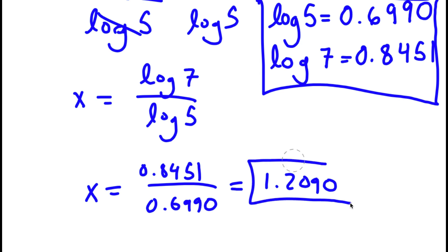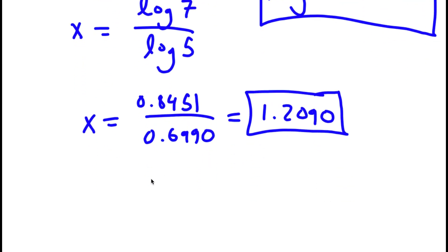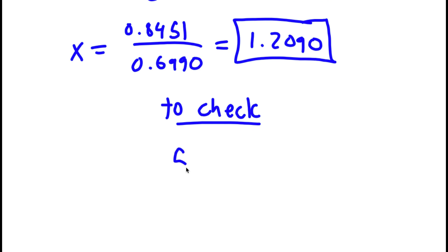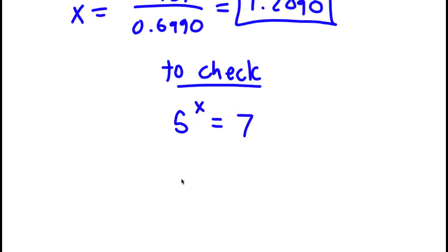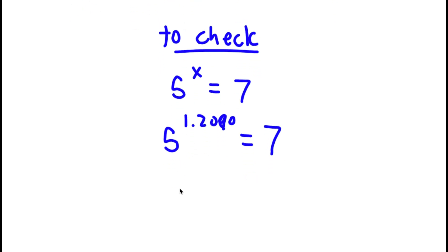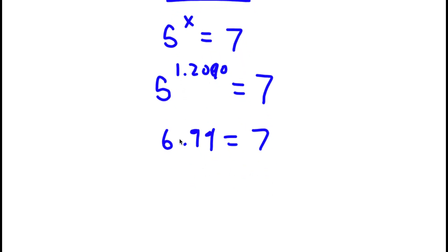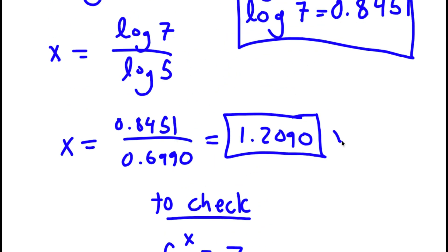So this is my answer. Now to check, I start with 5 to the power of x equals 7. I know that x equals 1.2090, so I have 5 to the power of 1.2090 is equal to 7. Now, 5 to the power of 1.2090 is equal to approximately 6.99. So I have 6.99 equals 7, and 6.99 rounds up to 7. So I have 7 equals 7, and because this is right, my solution is right.